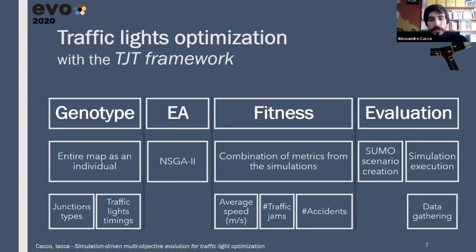So, let's see how our traffic junction tuner framework models the optimization problem. The genotype represents a configuration of a given base scenario, so that an individual corresponds to a specific map. It encloses information about the type and timings of every junction. A population of these individuals is evolved by means of NSGA-II, and by using as fitness a multiple arbitrary combination of metrics collected from the simulation of the individuals themselves. We use the SUMO simulator to benchmark these individuals, gathering directly from it the metrics that we use as part of our fitness.